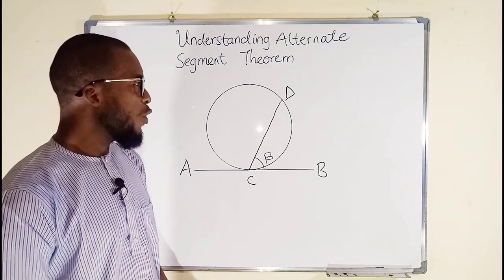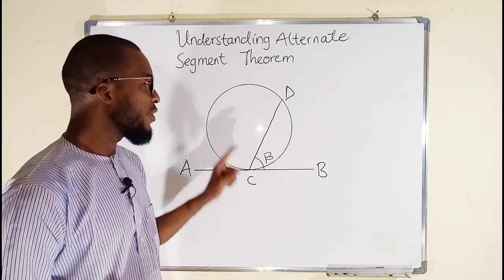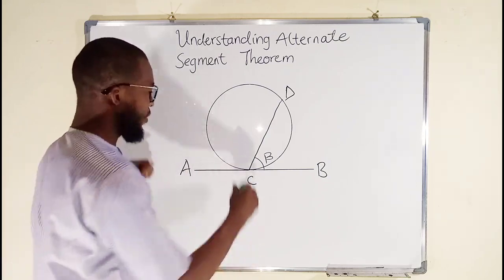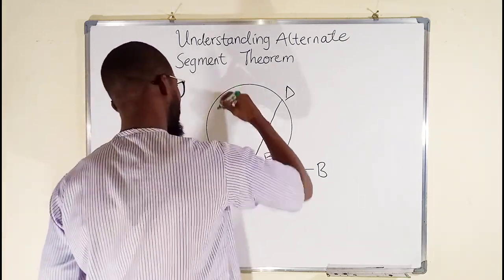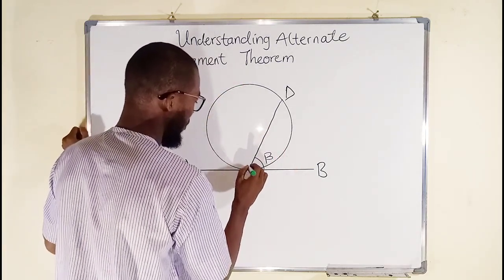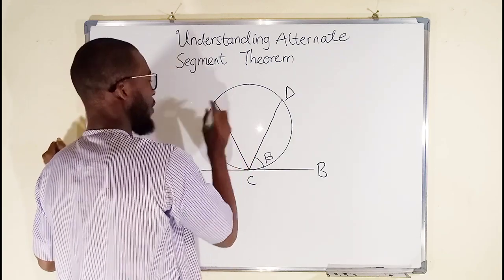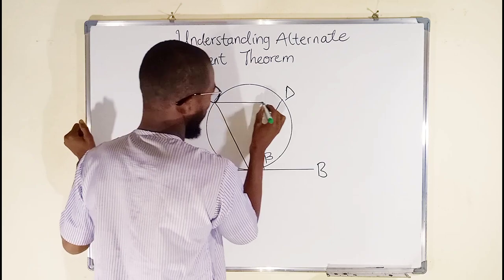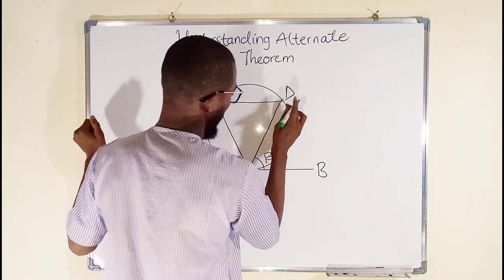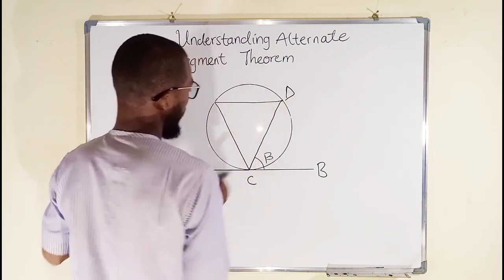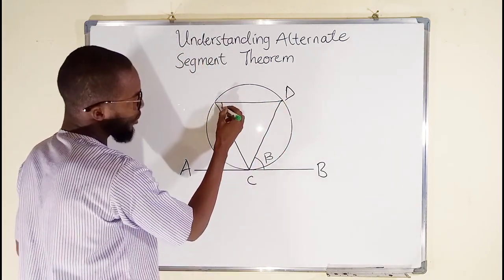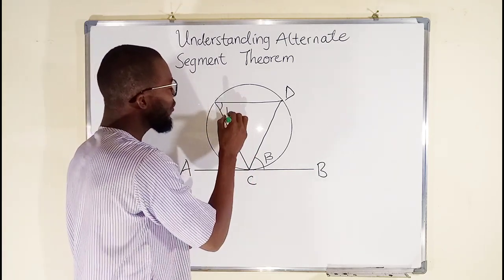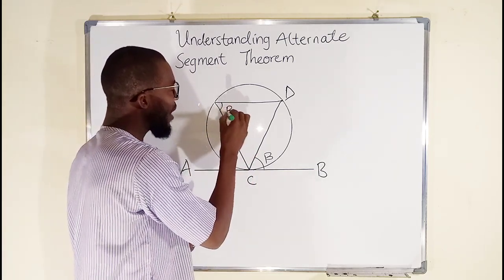Now we are going to subtend an angle to the circumference from end to end of this chord. This angle formed by the chord to the circumference is also the same as beta.